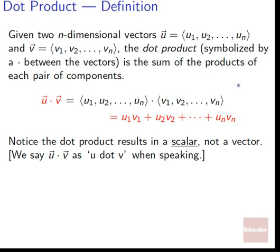Given two n-dimensional vectors — that is, vectors that have n components — u, with components u1, u2, up until the nth component un, and v, with components v1, v2, up until vn. The dot product, symbolized by a dot between the vectors, is the sum of the products of each pair of components.